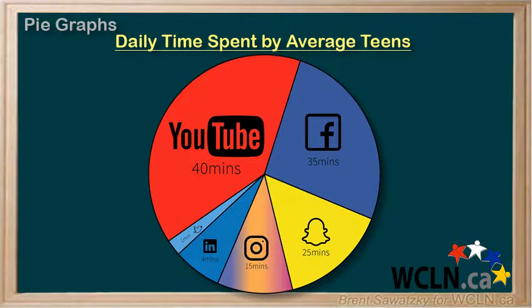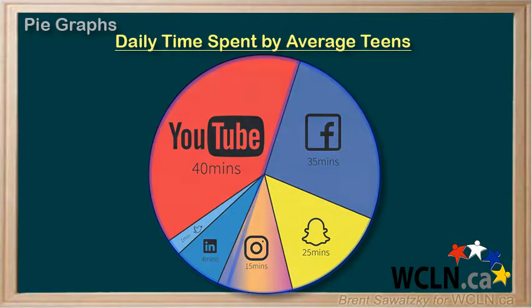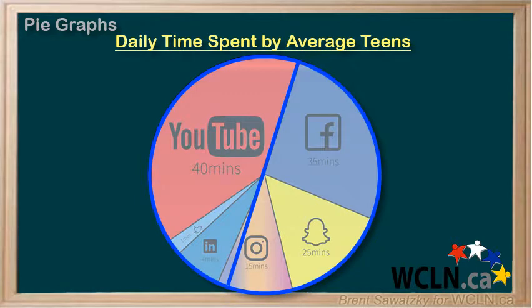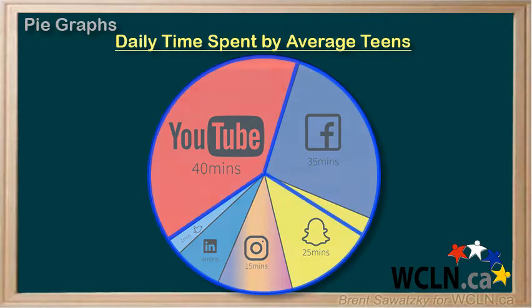We can clearly see that the most time being spent is on YouTube. The average teen here spends 40 minutes on YouTube. If we visualize the circle broken down into halves, the time spent on YouTube is definitely less than half of their total time online. If we visualize the circle broken down into thirds, we can see that the time spent on YouTube is about one third of the total time.